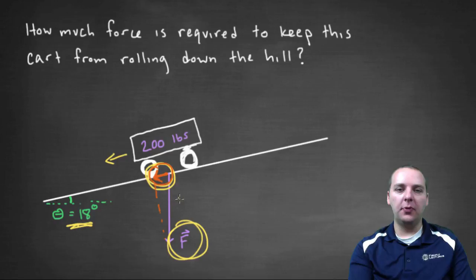Let's do that first. F is pointing straight down and it's got a magnitude of 200 pounds. So what vector points directly downwards with a magnitude of 200?